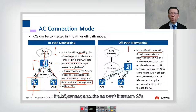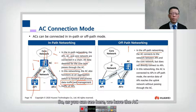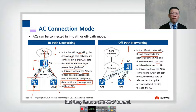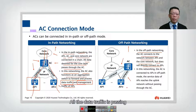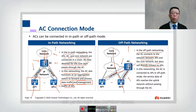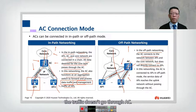In the off-path networking, the AC connects to the network between the AP and the core network. The AC connects to the IP network, and the CAPWAP tunnel is mainly for control purposes — it doesn't actually connect to the AP directly. The AP directly connects to the switch, but they form a CAPWAP tunnel mainly for control or management traffic. All data traffic passes through the AP and then the switch before going into the core network. The AC only controls the AP for control purposes, such as encryption and password authentication through the CAPWAP tunnel. When using off-path networking, the traffic doesn't go through the AC, so the bandwidth requirement on the AC is not as great.